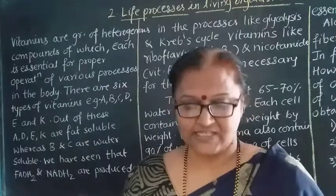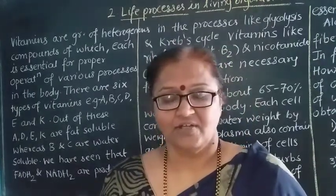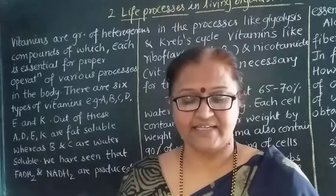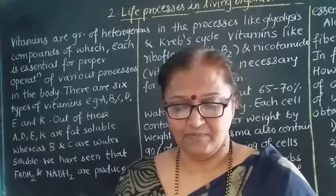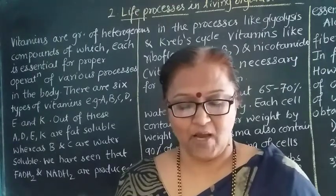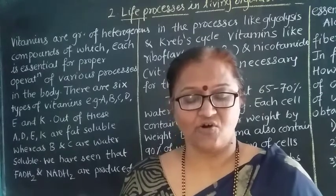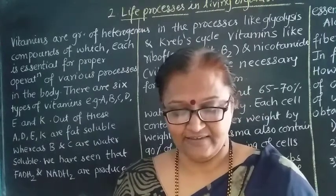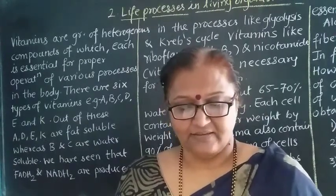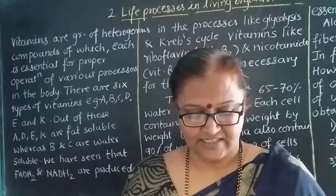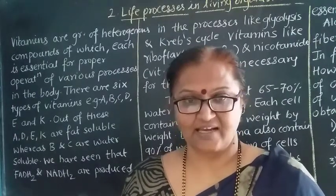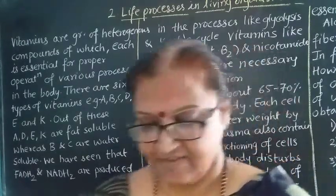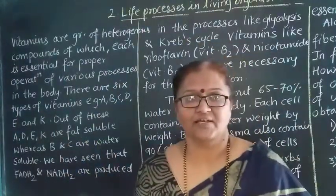On page number 17, the portion which is not for your exam is 'Think' — page number 17 'Think' is not there. The 3 points 'Use Your Brain Power' are cancelled. Then 'Internet is My Friend' is also cancelled. Then cell division — the 5 questions are cancelled. This is the portion which is cancelled on page number 17.